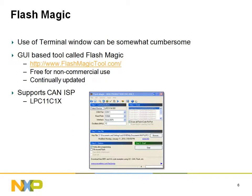While the command line interface to ISP can be useful as a failsafe, it may not be everyone's preferred method. It's good news, then, that a Windows-based GUI exists to automate many of these tasks. The tool is called FlashMagic and can be used in non-production environments without a license. The latest version of FlashMagic can be obtained at www.flashmagictool.com.